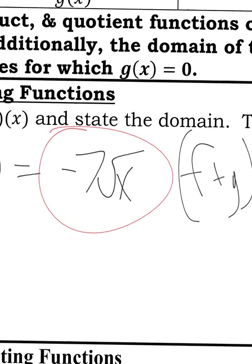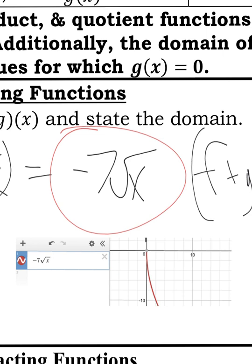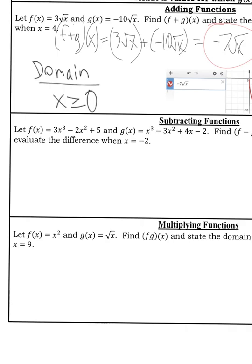I'm going to graph negative 7 times the square root of x. You can see here that negative 7 times the square root of x, it's going down, but domain is just, is it going left or right? It's starting at 0 and going right forever. So the domain is x is greater than or equal to 0.